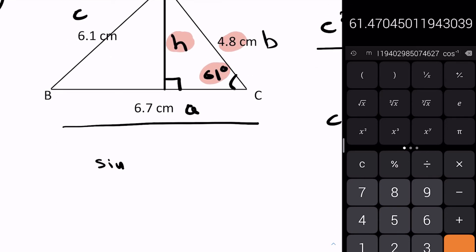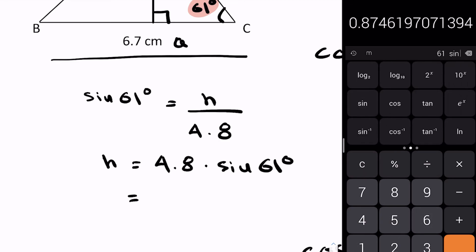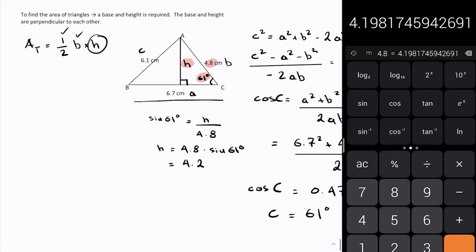So I'm going to go now sine of 61 degrees equals h over 4.8. I'm going to isolate for h: h is 4.8 times sine of 61. And that gives me, let's see, 61 sine times 4.8, 4.2. So I have my height 4.2.